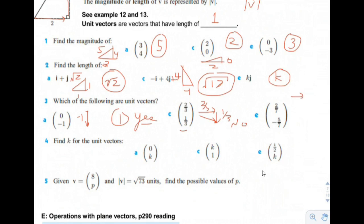Over 2 sevenths and down 5 — that adds up to 1, but the hypotenuse will not add up to 1. So no, it's not a unit vector.